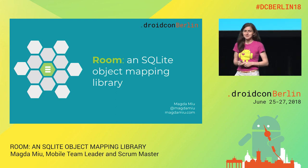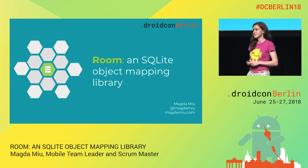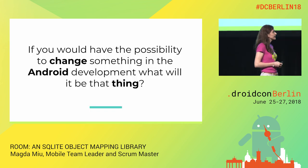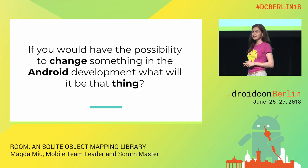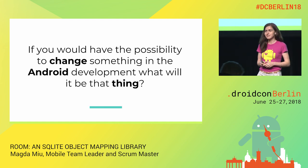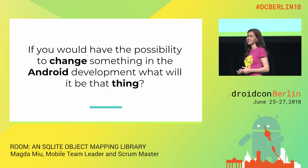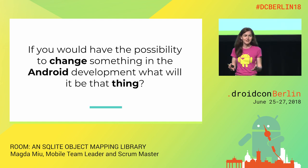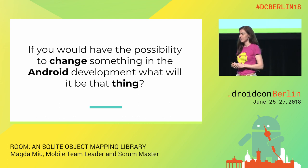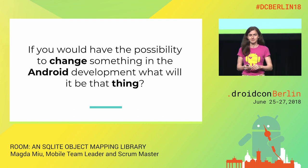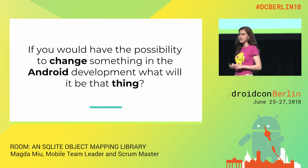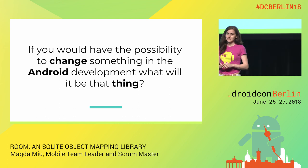Hello everybody. Let's play the imagination game. Please try to find out an answer for the next question: if you have the possibility to change something in Android development, what would it be? Maybe the way to handle the lifecycle of UI components, or the way to update the UI when something changes in your database, or even the way to handle an SQLite database in Android. Google addressed the same question to Android developers and got an interesting answer.